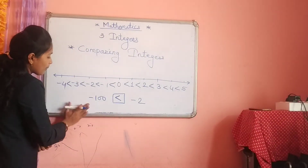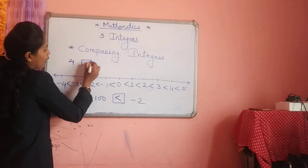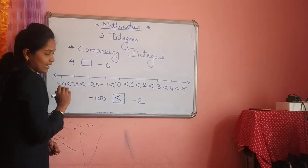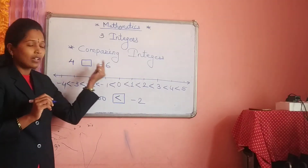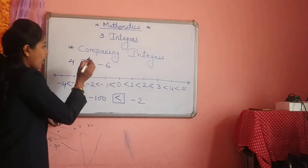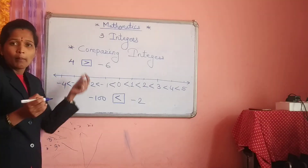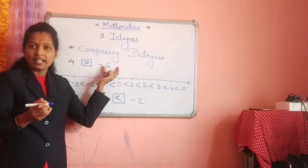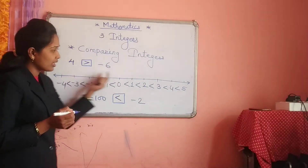Suppose one number is positive — say 4 — and another is minus 6, one positive and one negative. Always remember: the positive number is always bigger than the negative number. So the comparison is straightforward in that case.